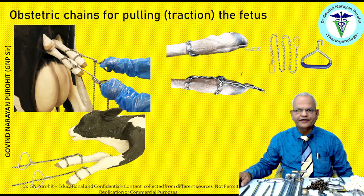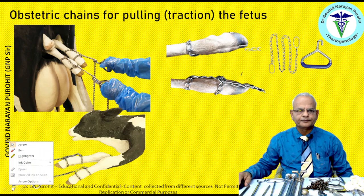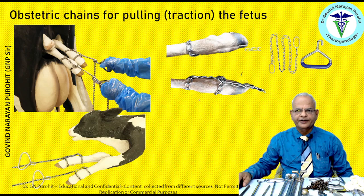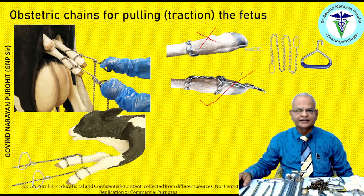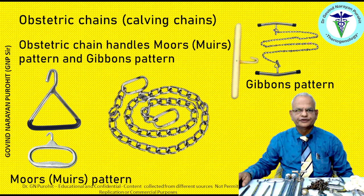This is the correct approach to apply a chain on the leg. The incorrect approach places excessive pressure on the joint, which may cause it to separate. In the pictures you can see chains applied on both legs being pulled by the Moore's obstetric chain handle. This is the Moore's obstetric chain handle and this is the Gibbons pattern or T-handle for pulling the obstetric chains.